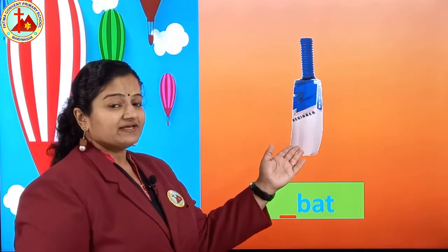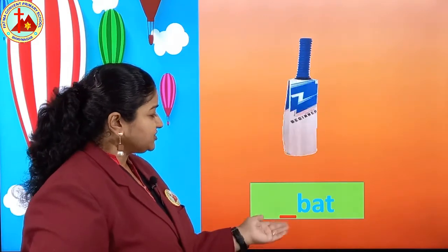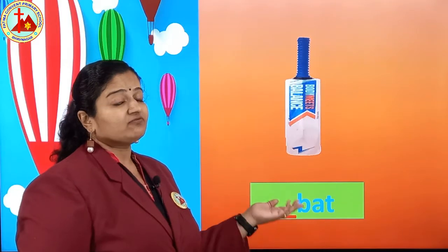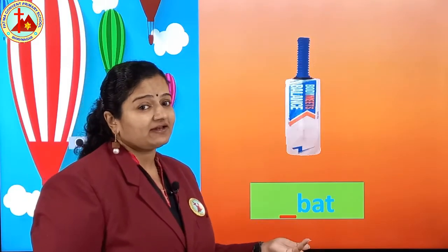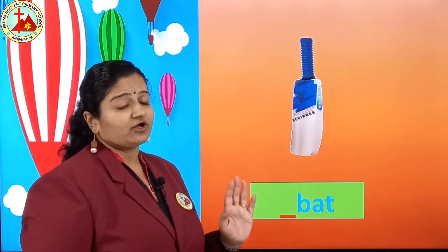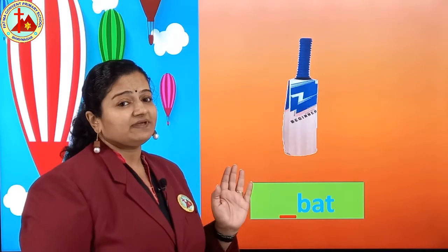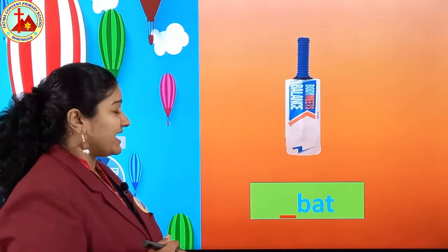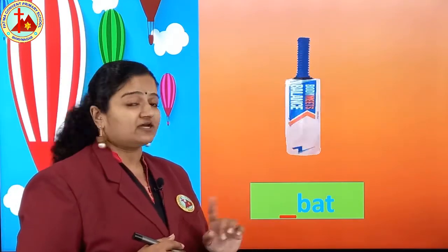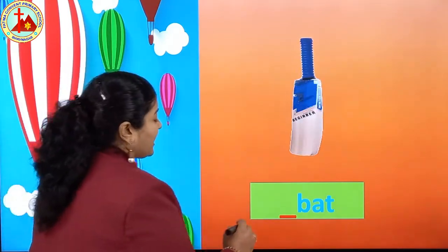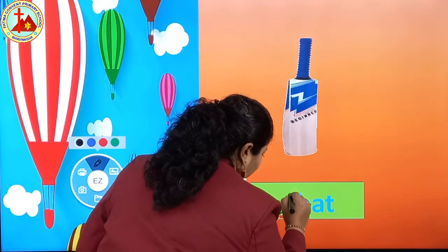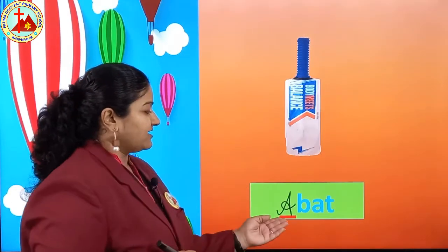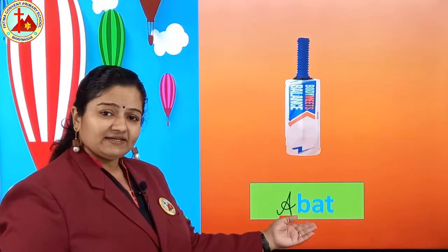Next one is bat. B, A, T — bat. Before B, what will come — A or AN? Now I will not tell you, you tell me. Very good — A bat, because B is not a vowel. Write cursive capital A: a bat.